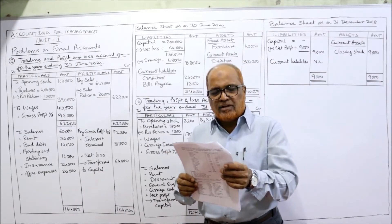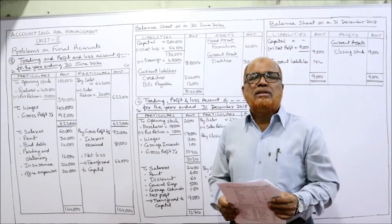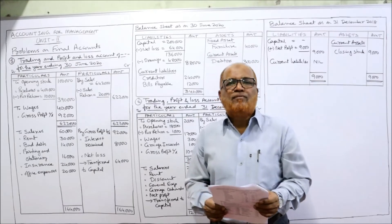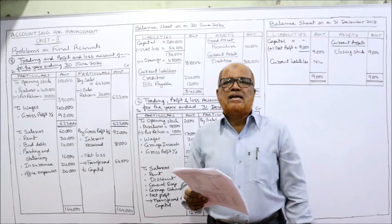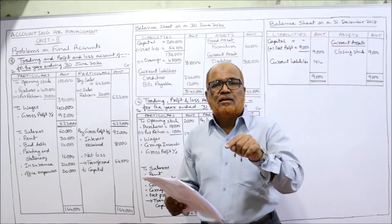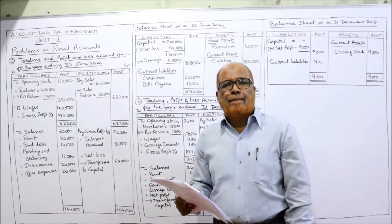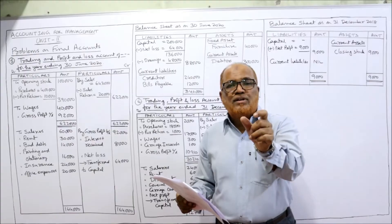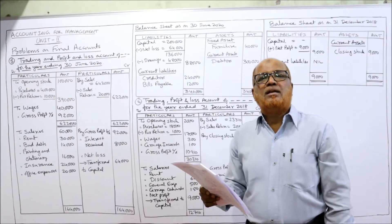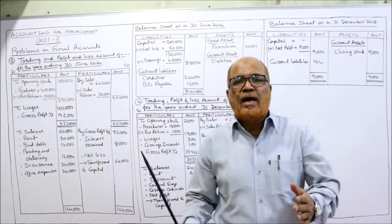Insurance — P&L account debit side. Office expense — P&L account debit side. Drawings — deducted from capital on the liability side of the balance sheet. Debtors — current asset. Furniture — fixed asset. On the credit side: sales — trading account credit side. Purchase return — deducted from purchases on the debit side of the trading account. Interest received — P&L account credit side. Bills payable and creditors — both current liabilities. Capital — liability side.